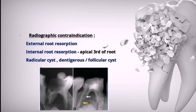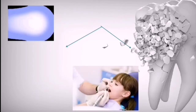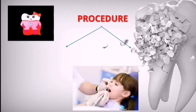The radiographic contraindications for pulpectomy are: external root resorption, internal root resorption especially of the apical third of the root, the presence of a radicular cyst, or a dentigerous or follicular cyst — in these cases you cannot proceed with pulpectomy.